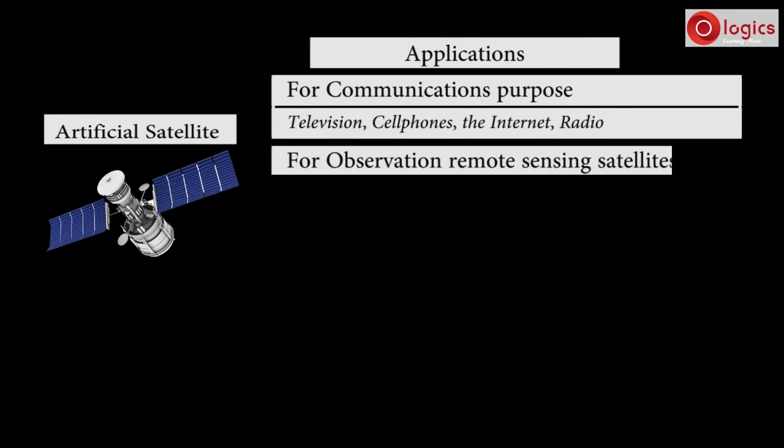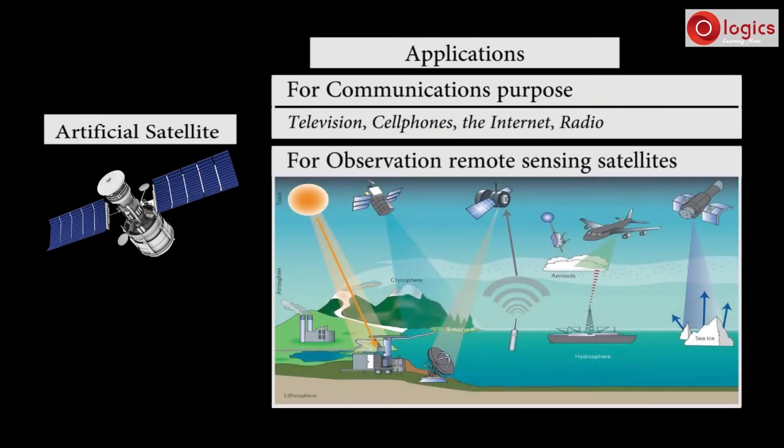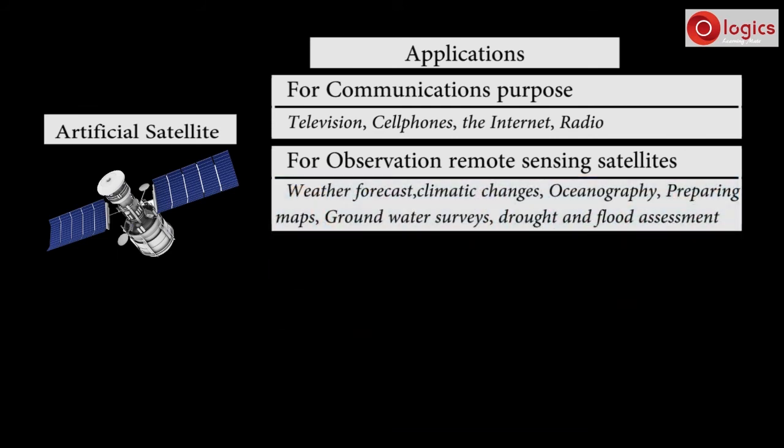For observation, remote sensing satellites are used in weather forecasts, monitoring climatic changes, oceanography, preparing maps, groundwater surveys, drought and flood assessment.